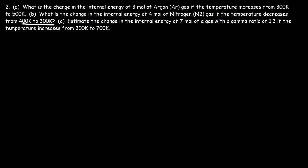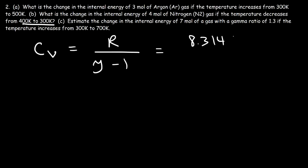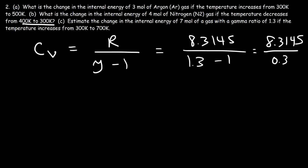Now for part C: estimate the change in internal energy of 7 moles of a gas with a gamma ratio of 1.3 if the temperature increases from 300 Kelvin to 700 Kelvin. To find Cv using the gamma ratio, the formula is Cv equals R divided by (gamma minus 1). So it's 8.3145 divided by (1.3 minus 1), which is 8.3145 divided by 0.3, giving a molar heat capacity of 27.715 joules per mole per Kelvin.